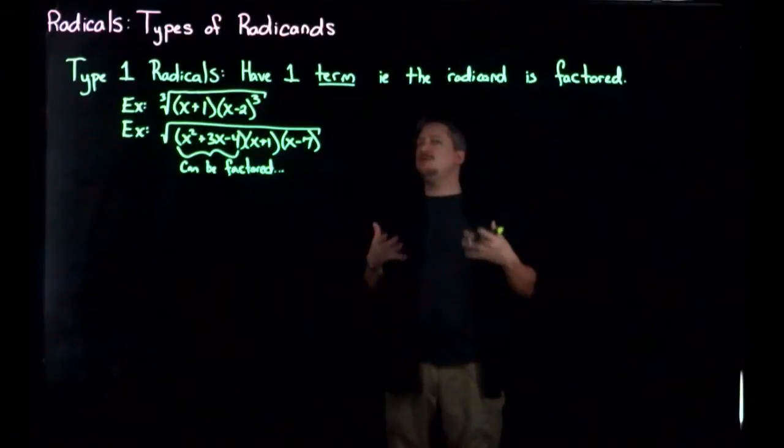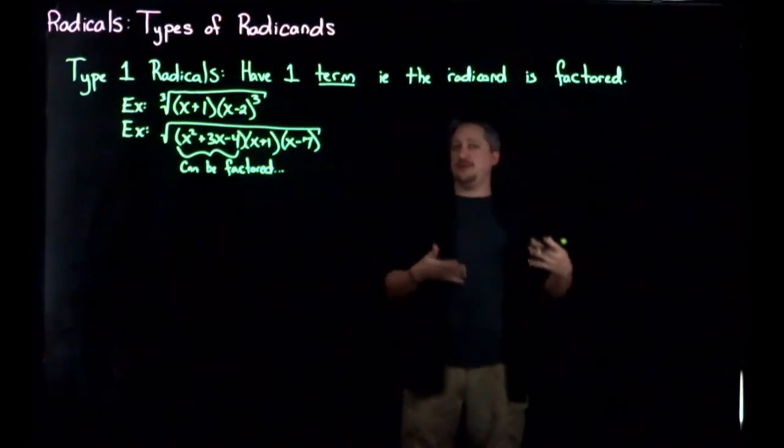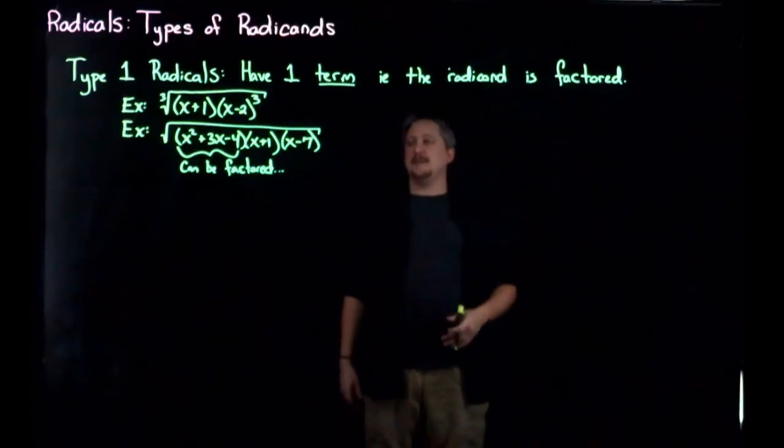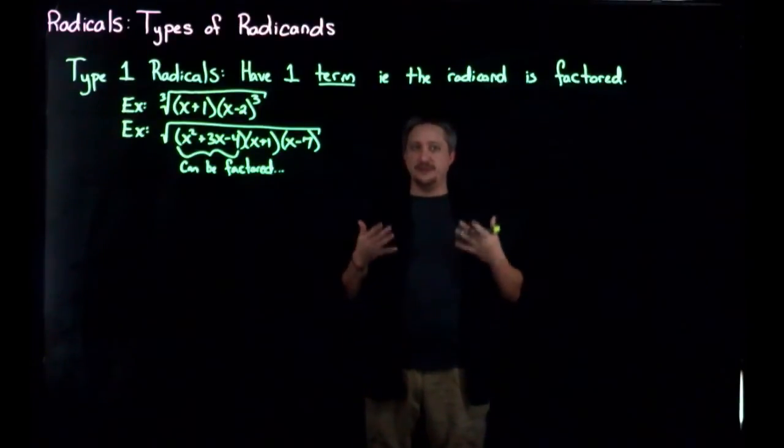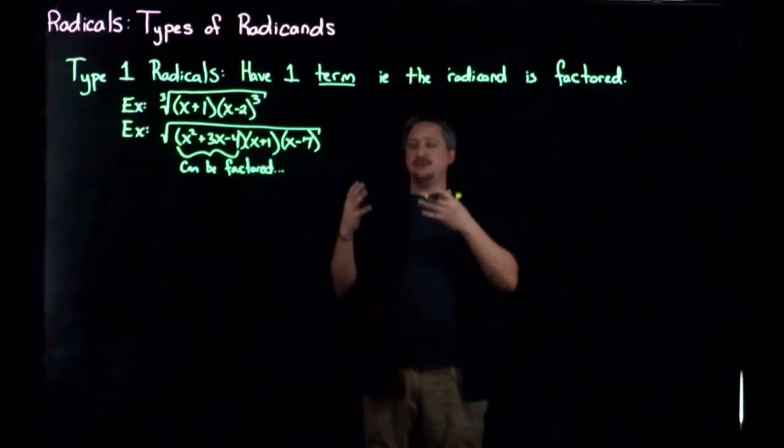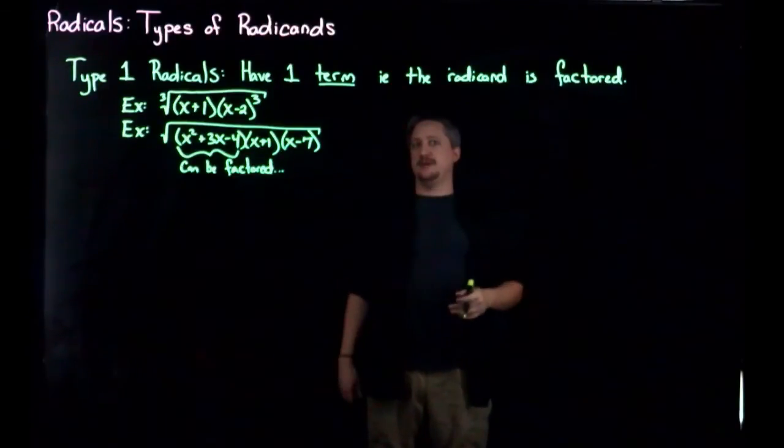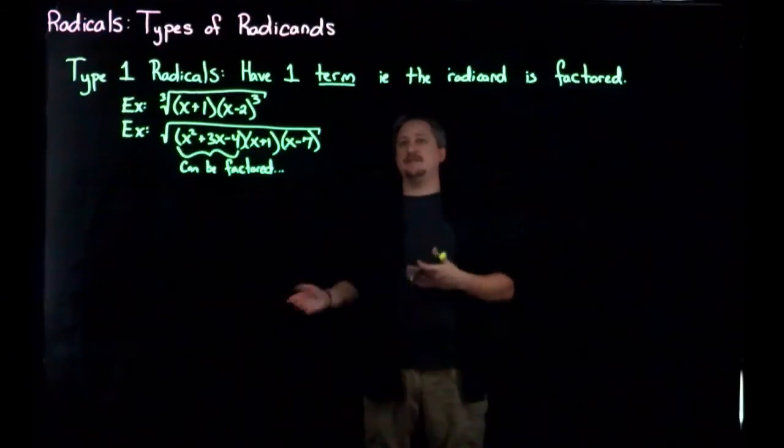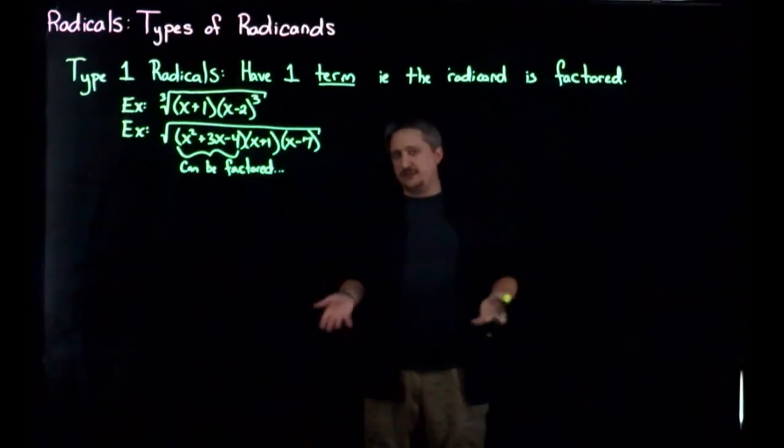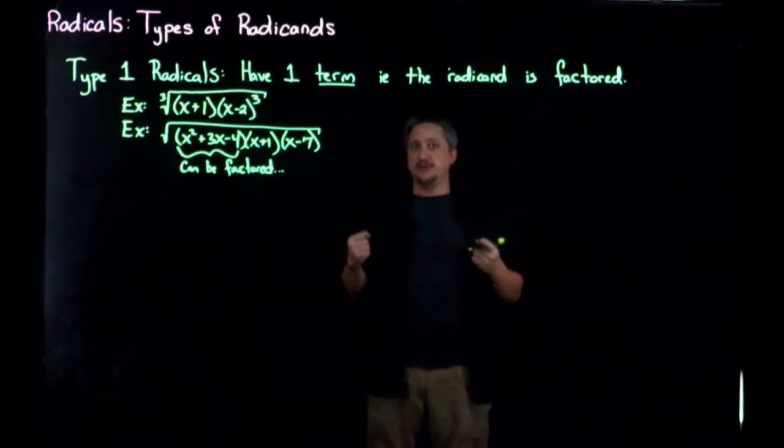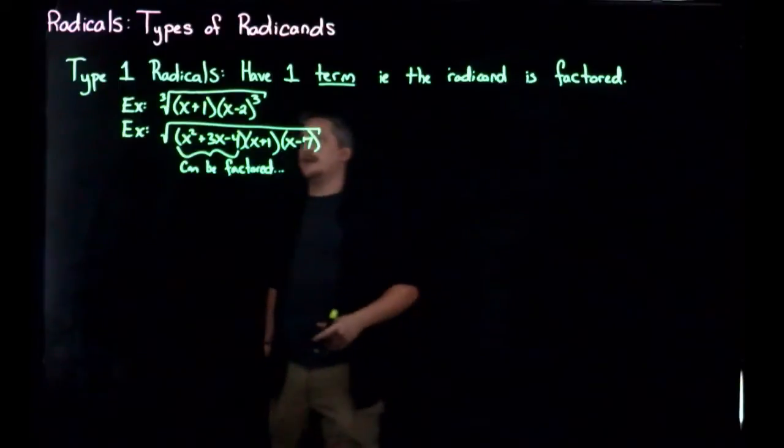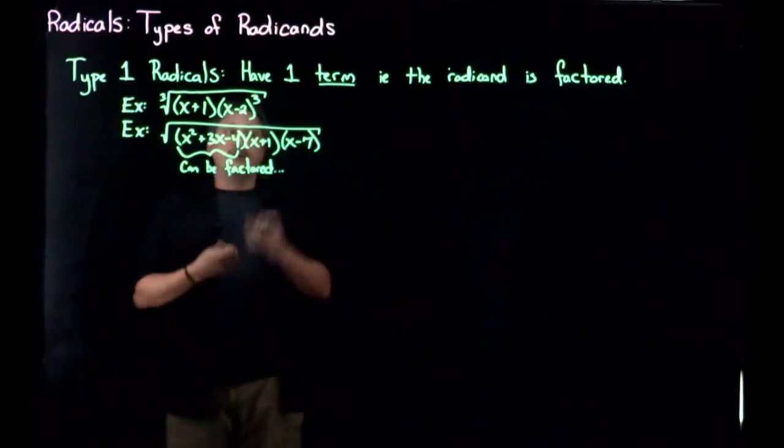So it doesn't technically have to be fully factored to be a type 1 radical. That being said, almost certainly you're going to want to fully factor it in order to actually do stuff with it. But you don't have to, and that's an important distinction here. That's what makes it a type 1, is that there's only the one term. It has to be factored, not necessarily fully factored, to be a type 1.